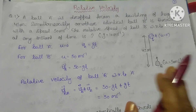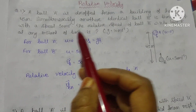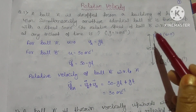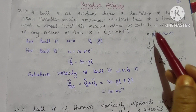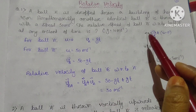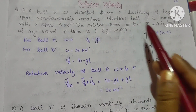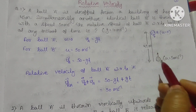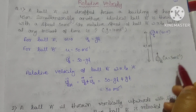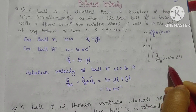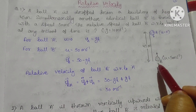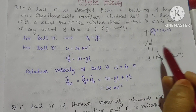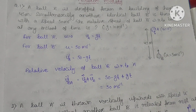Let us take an example: Ball A is dropped from a building of height 45 meters. Simultaneously, another identical ball B is thrown upward with a speed of 50 meters per second. The relative velocity of ball B with respect to ball A at any instant of time is?